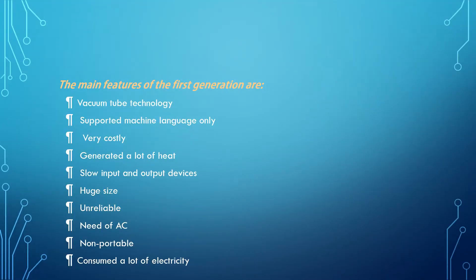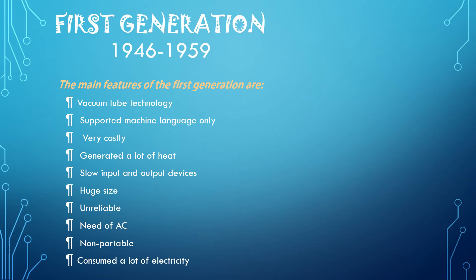Moving to the first generation, which was from 1946 to 1959. In this generation, computers used vacuum tubes as the basic component for memory. These tubes, like electric bulbs, produced a lot of heat, and the installation used to fuse frequently, therefore they were very expensive.